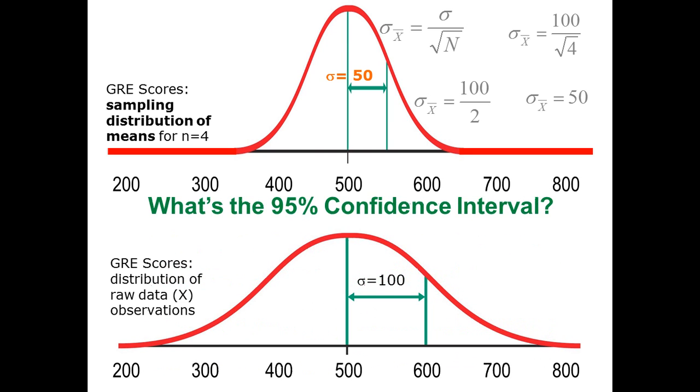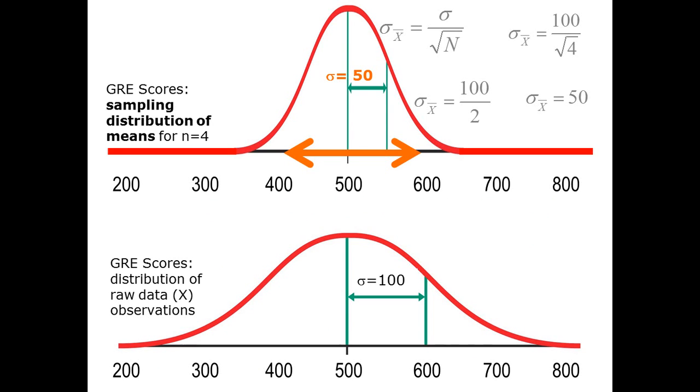So the 95% confidence interval, then, we could just say it's two standard deviations. So two standard deviations there, so 400 to 600. A standard deviation is 50, so two of them down is 400, and two of them up is 600. And so what we would do is we would just do all this math, and we'd kind of forget about it, and then we say the mean of our sample is 500, and the confidence interval is 400 to 600.